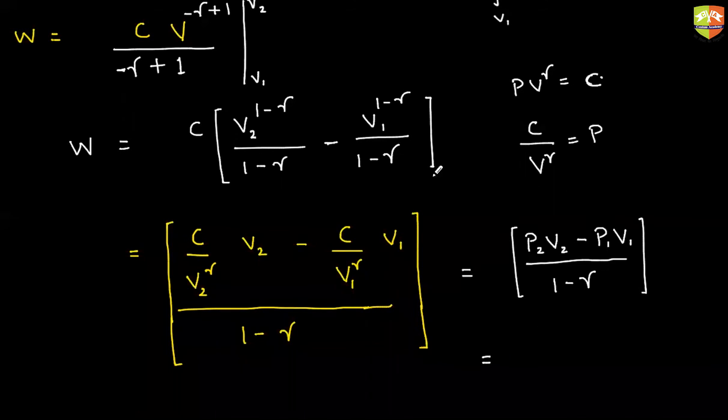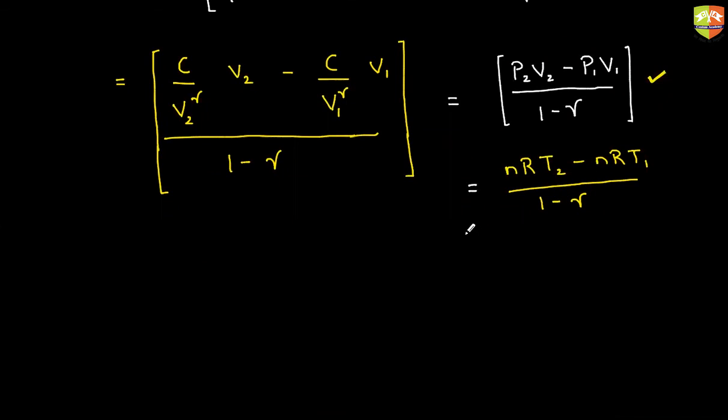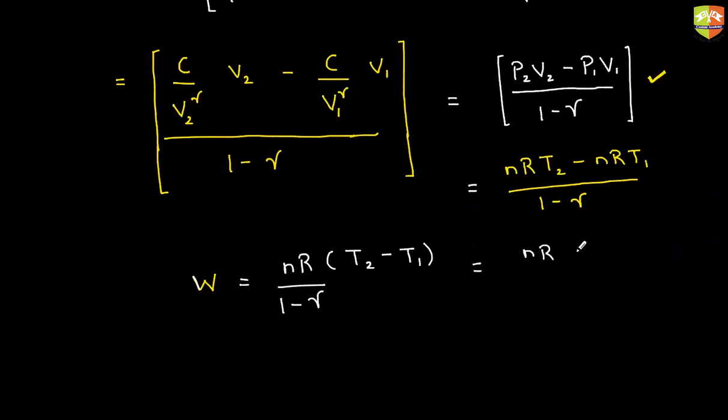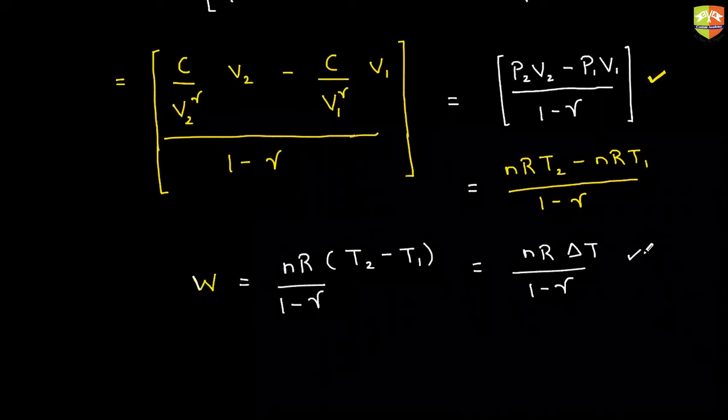This can be further written as - I know at a particular point P1V1 is nRT1, and P2V2 is equal to nRT2. So I can write it as nRT2 minus nRT1 divided by 1 minus gamma. This is the work done in terms of P1V1 and P2V2. Now I am trying to find out work done in terms of T1 and T2 temperatures. So work done by the gas is nR(T2 minus T1) divided by 1 minus gamma. This I can write as nR delta T divided by 1 minus gamma. So this is the work done in adiabatic case.